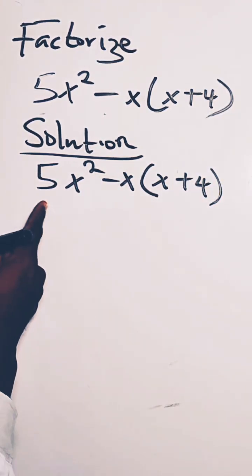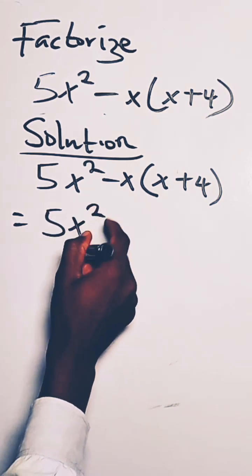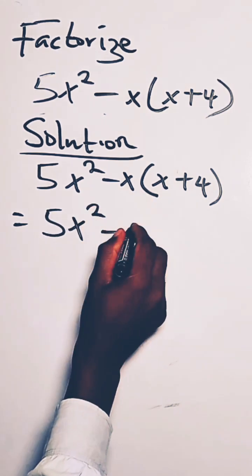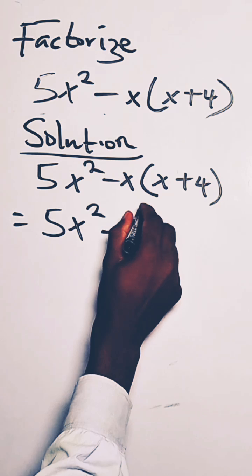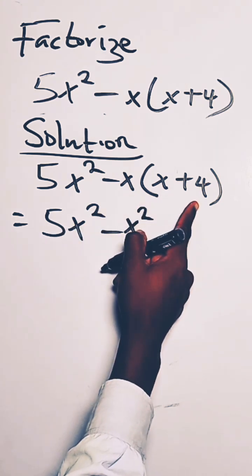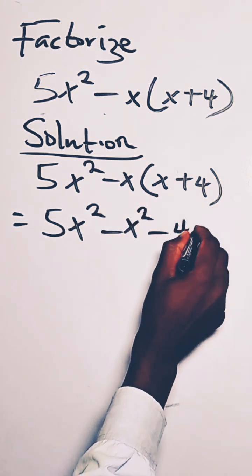Okay, so we can have this as 5x squared. So we distribute this, so we have minus x times x, x squared, minus x times plus 4, we have to have minus 4x.